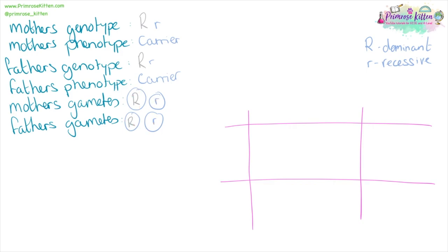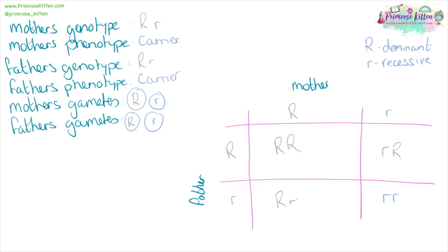We move the mother's gametes across and the father's gametes down the Punnett square, then fill in the boxes. The offspring results are: one with dominant-dominant — homozygous and a non-sufferer; two of the potential offspring are heterozygous and carriers; and one in four has a chance of being homozygous recessive and a sufferer.